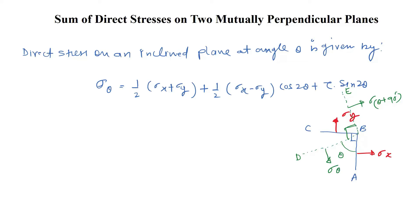We are going to discuss the sum of direct stresses on two mutually perpendicular planes. Consider this AB plane — on this plane the direct stress is sigma x — and perpendicular to this is the BC plane, on which the direct stress is sigma y.